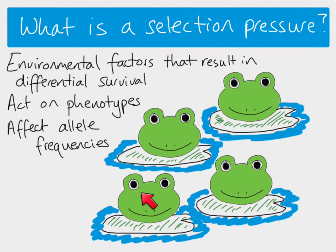My frog population here all look identical, but we have to understand that phenotype can mean many different things. It doesn't just mean what something visually looks like — it could be differences in their metabolism or differences in their ability to reproduce. Phenotypes aren't always visible, but there must be variation in the phenotypes in order to have differential survival.